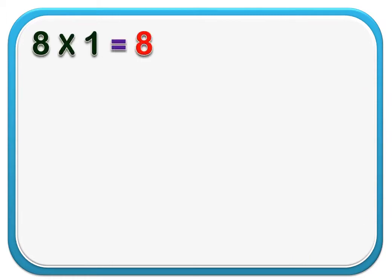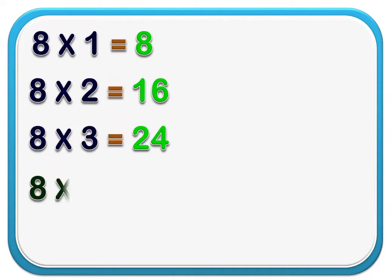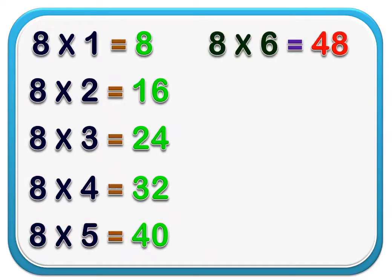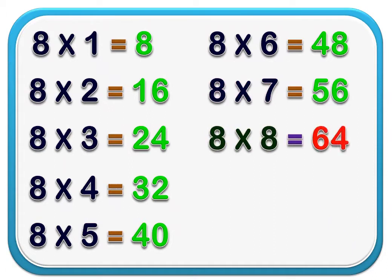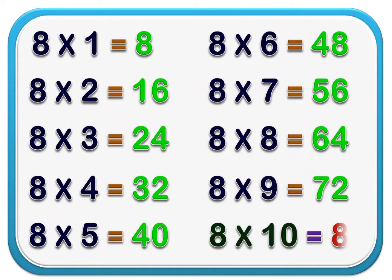8 1's are 8. 8 2's are 16. 8 3's are 24. 8 4's are 32. 8 5's are 40. 8 6's are 48. 8 7's are 56. 8 8's are 64. 8 9's are 72. 8 10's are 80.